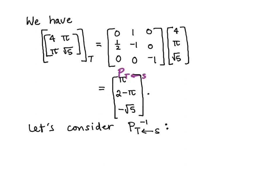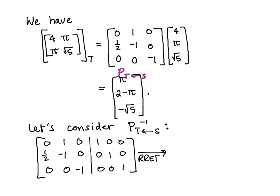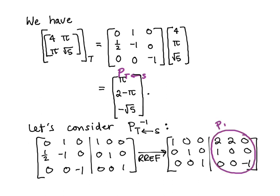Now let's look at the inverse of the transition matrix that we calculated. So we know that we can calculate this by row reducing the augmented matrix that looks like this. And when we do that, we find the inverse of the transition matrix, and it looks like that.